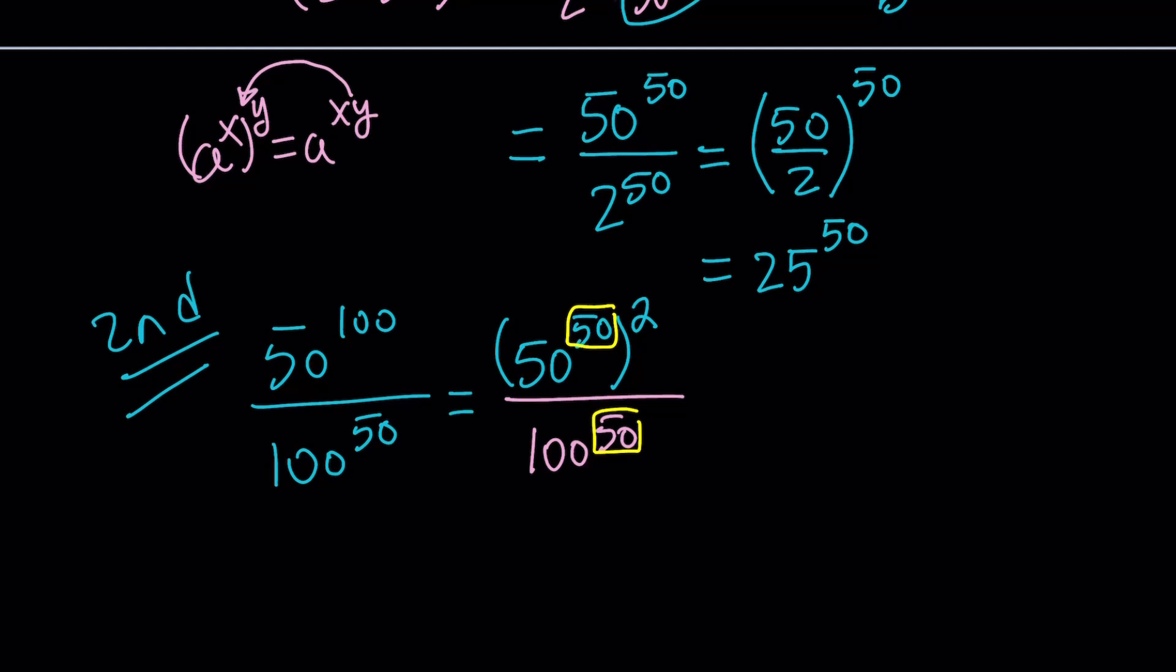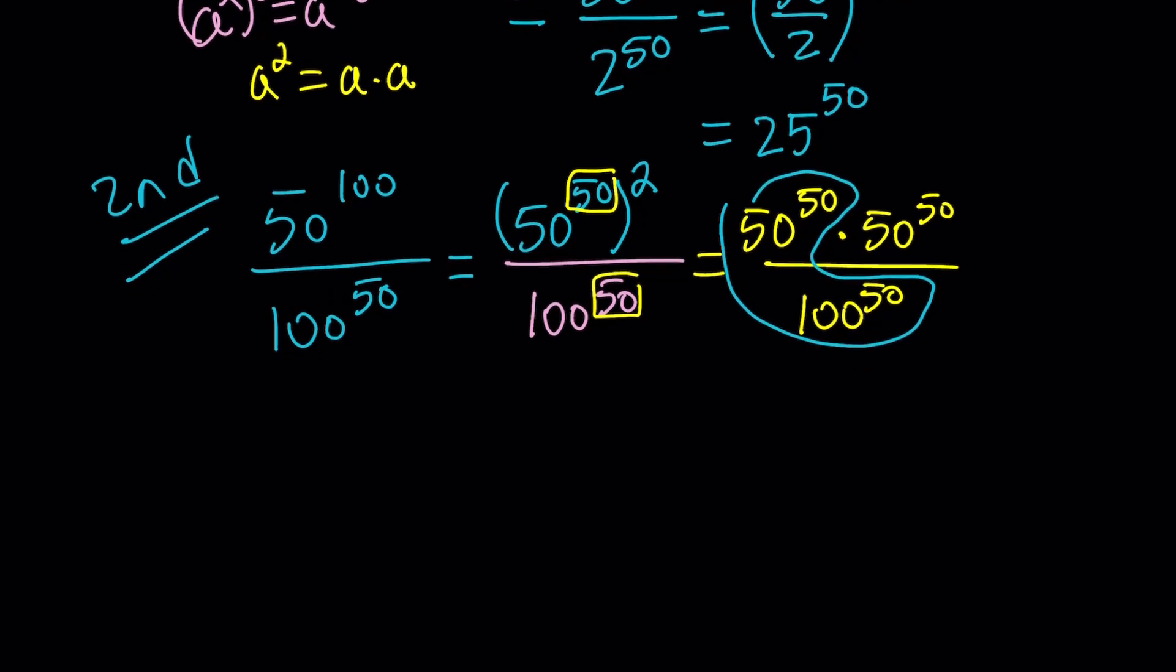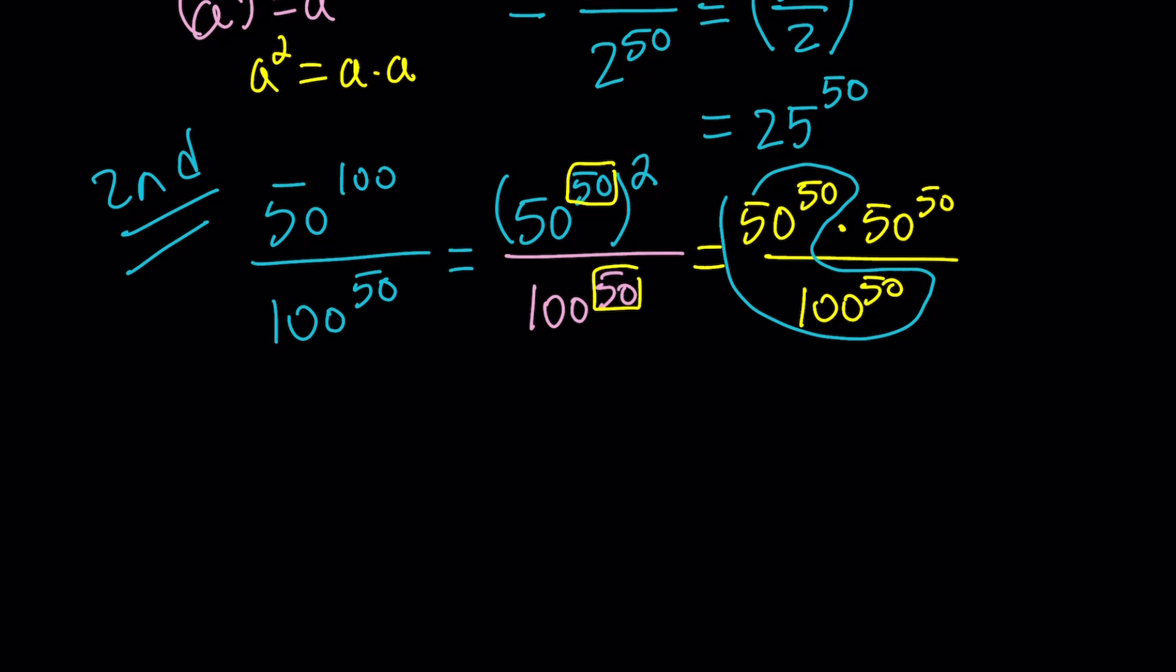Well, think about the definition of square. What does a squared mean? It's all about definitions. It means a times a. So I can write this as 50 to the power 50 multiplied by itself, divided by 100 to the 50. And now I'm going to group these two together because they will have the same exponent. We're just going to divide the bases. 50 divided by 100 and then raised to the same power 50. And that will be multiplied by 50 to the power 50.